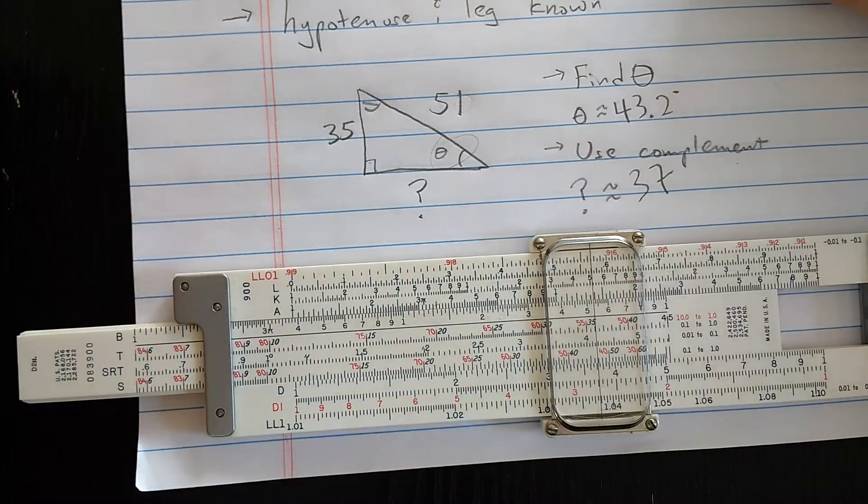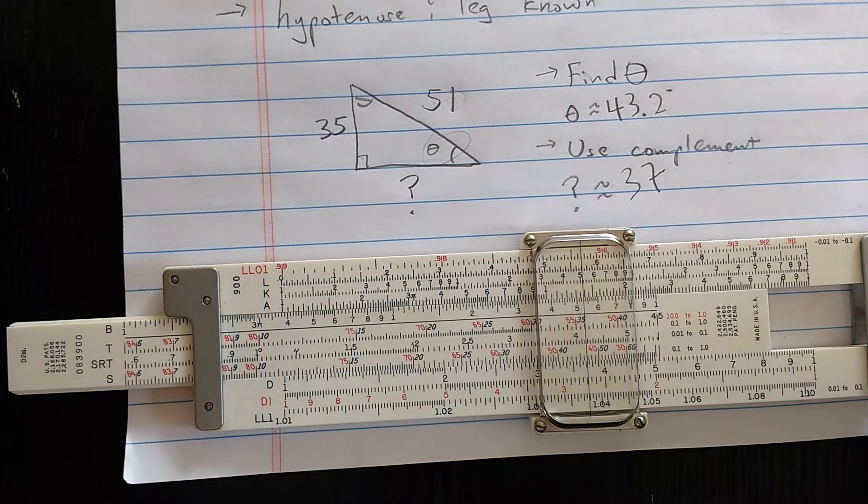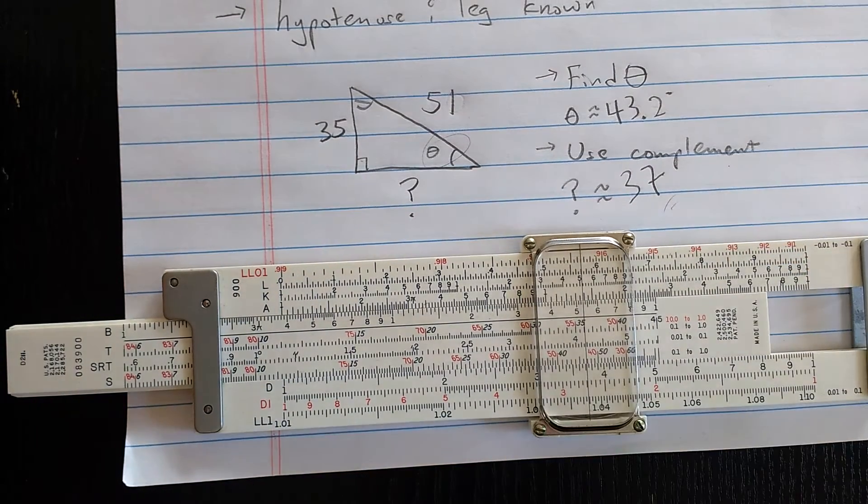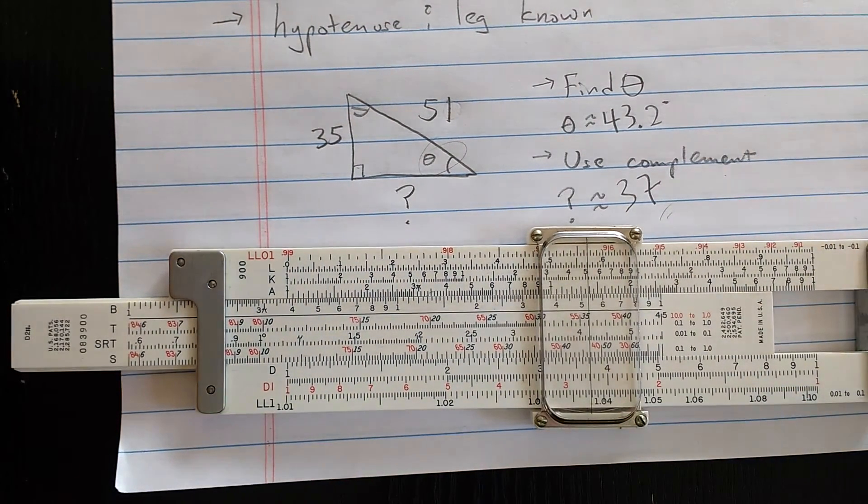Now, that computation can be done on a slide rule with a P scale in a different way, and I actually have a video about the Pythagorean scale if you want to look at that. But that scale is rare, especially on American slide rules like this one. All right, good luck.